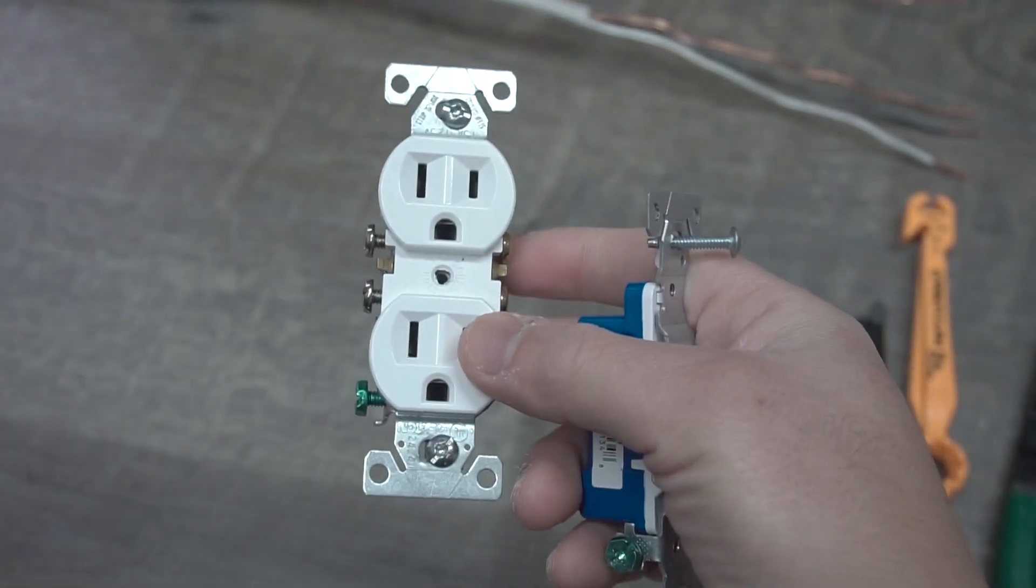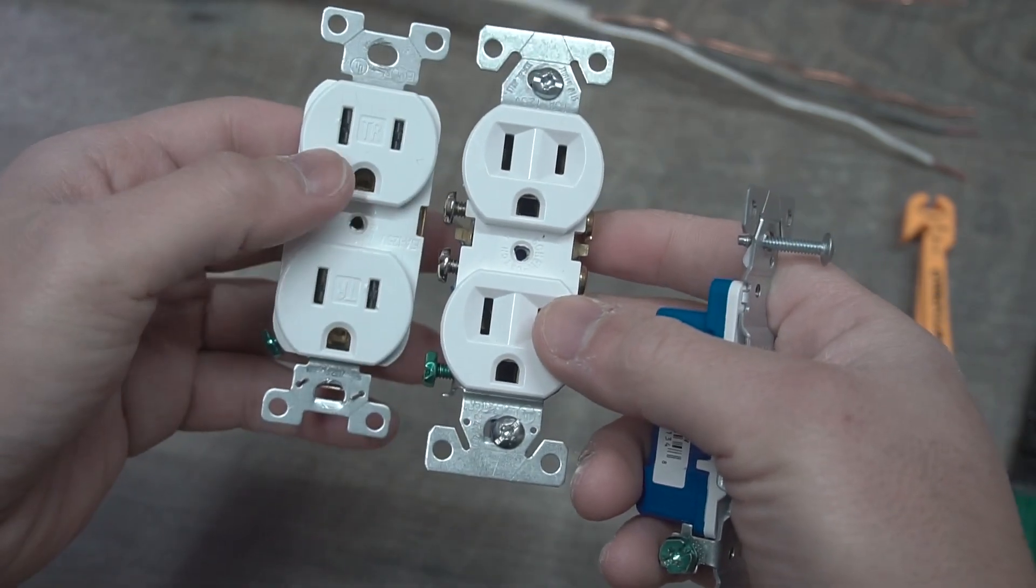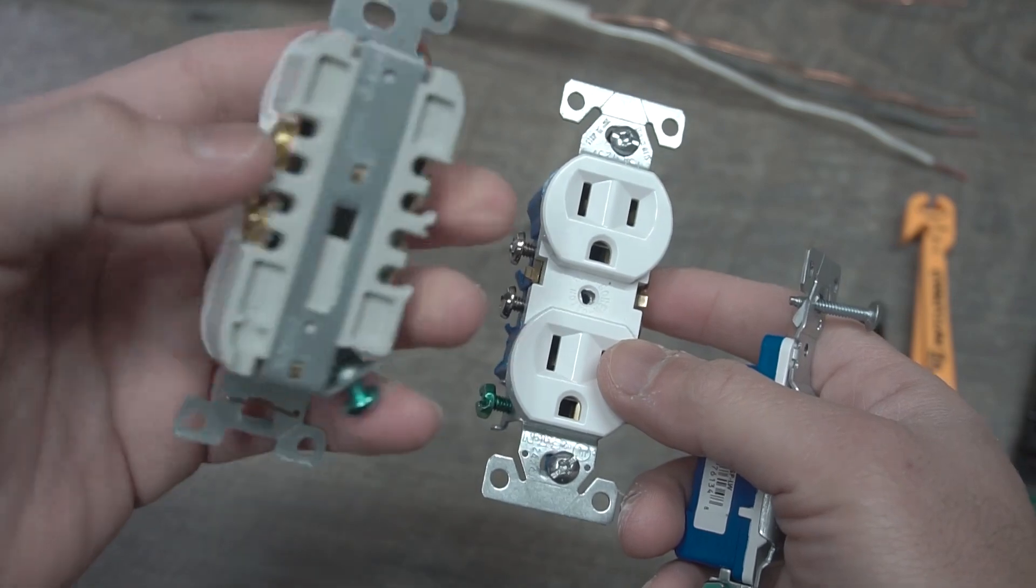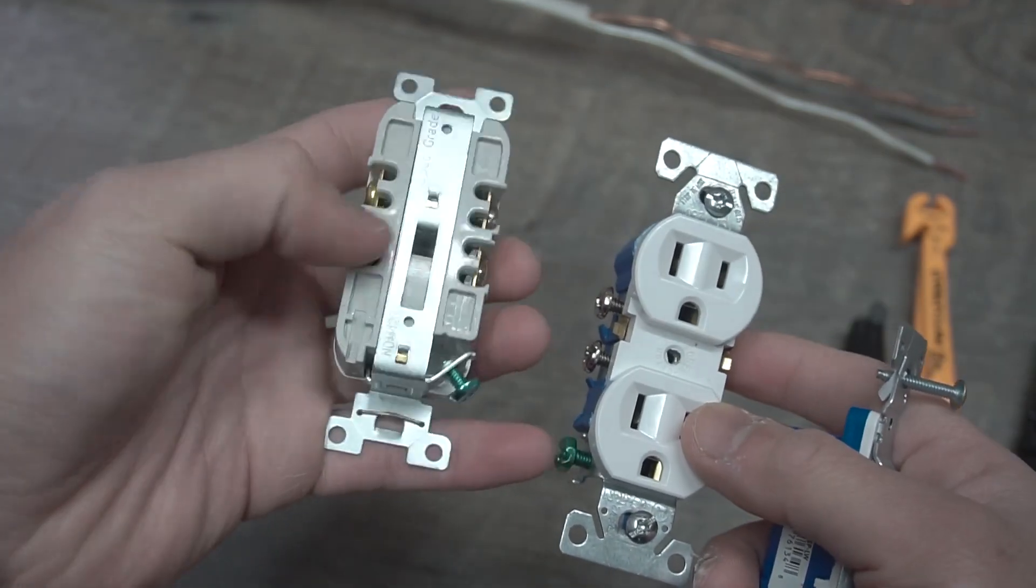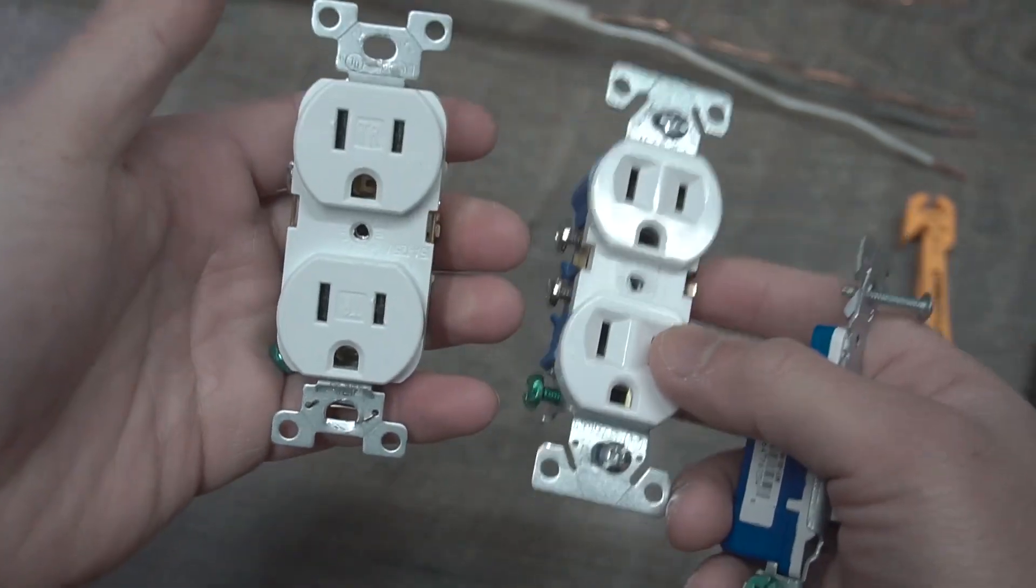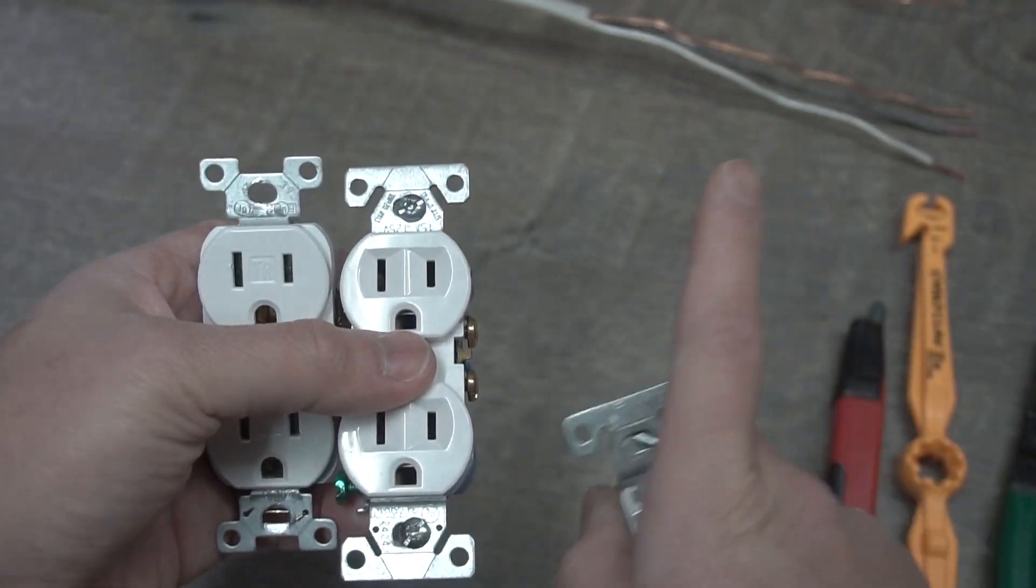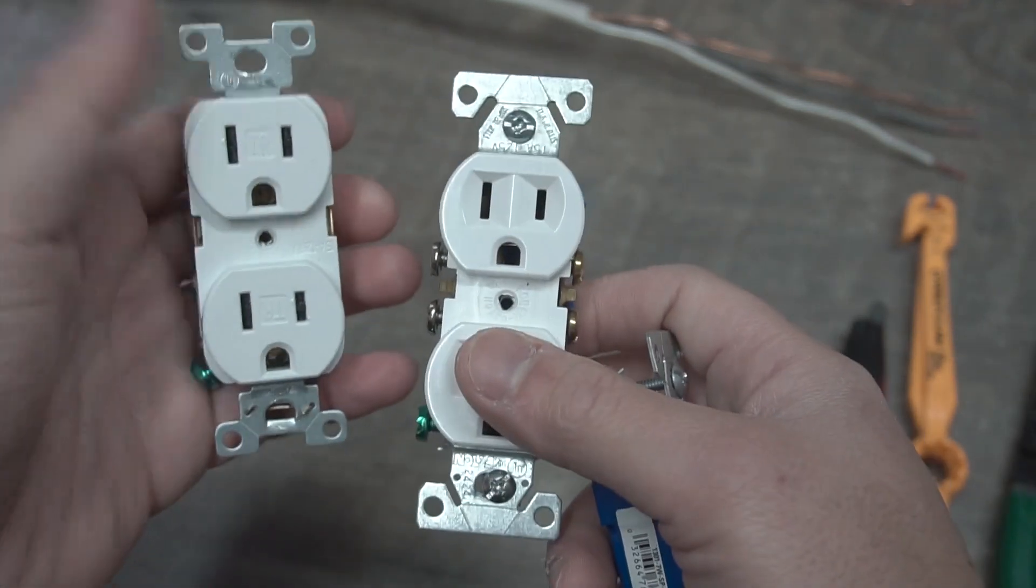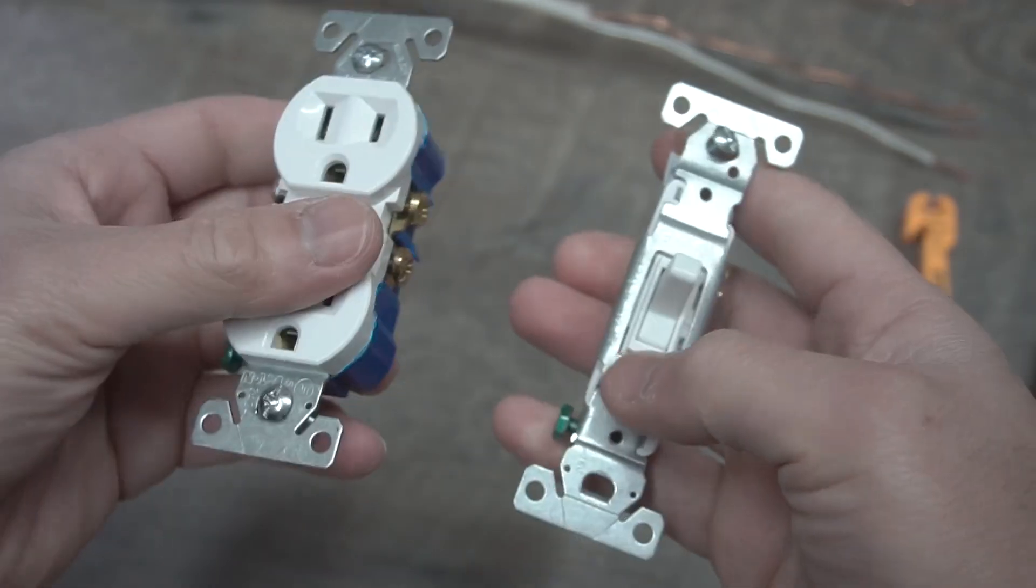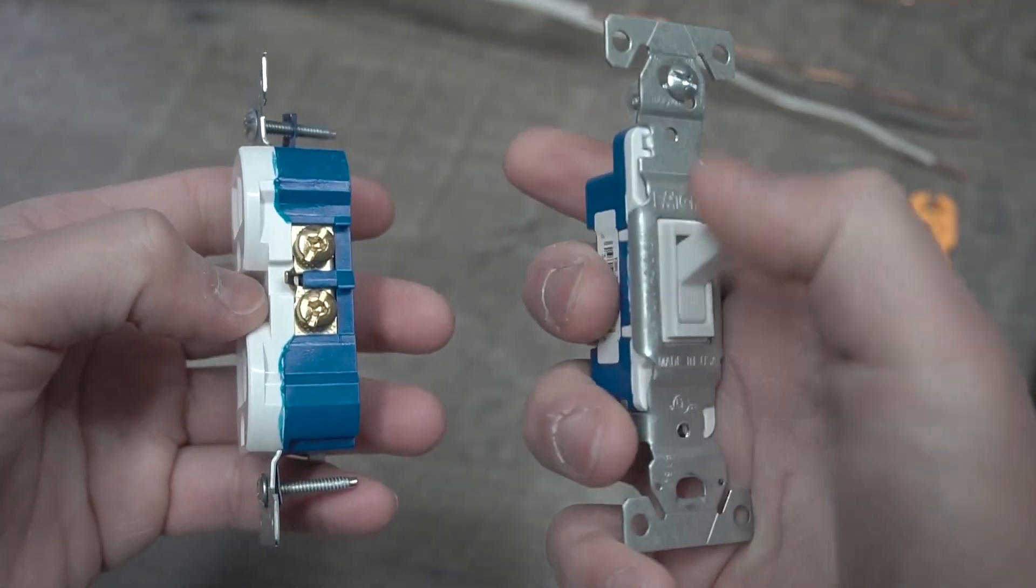Now, depending on the code that you're on, some codes require that you have a tamper resistance on newer builds. And this one's actually commercial. You can tell that this is actually built really well. If you want to know more about outlets and how the difference between residential and commercial, I'll leave the video on the top right.